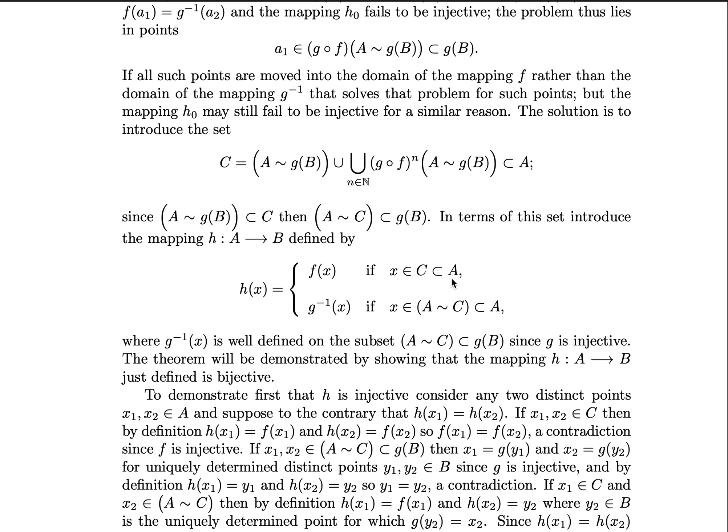So let's consider what happens once we construct this set C. Since A except g(B) is a subset of C, then clearly A except for C is a subset of g(B). So now we can finally construct our final mapping, which is just borrowing ideas from the beginning,